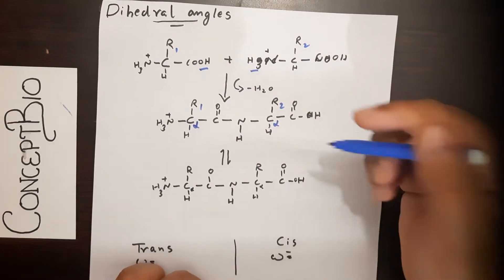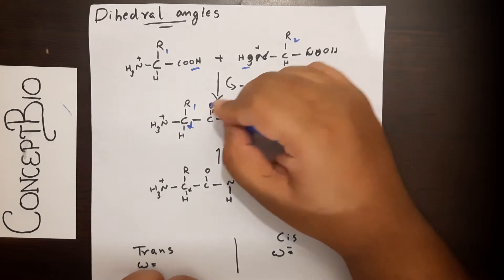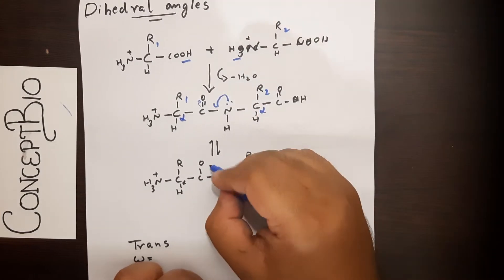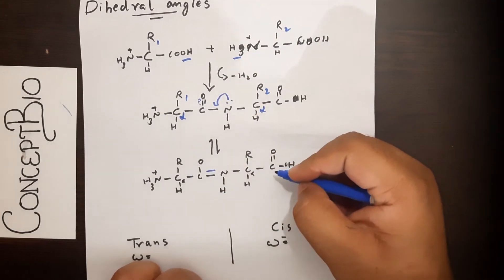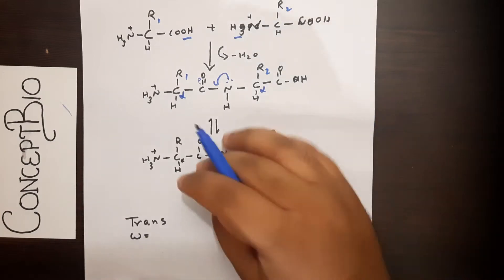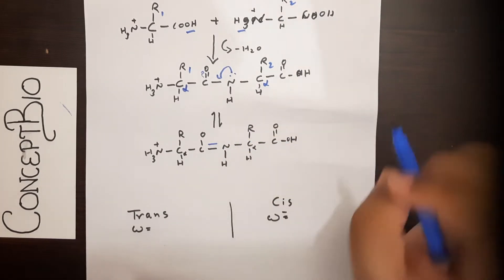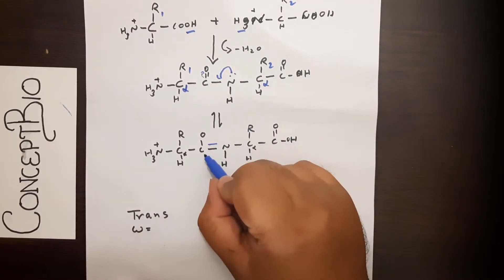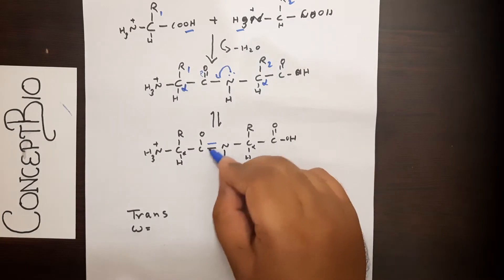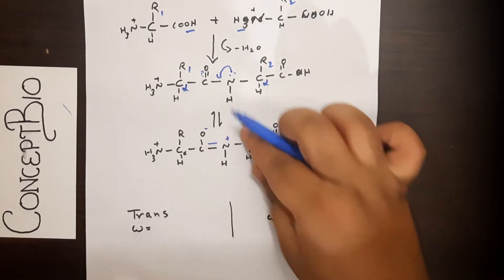Something important to know: nitrogen has a lone pair. This lone pair participates in resonance, and what happens is a partial double bond forms between the carbonyl carbon and the amine nitrogen from the other amino acid. We call it a partial double bond because the resonance occurs only to a small extent, but it is significant enough to show up in the structure. The oxygen gets a slight negative charge and the nitrogen a slight positive charge.